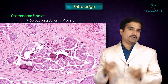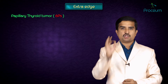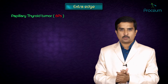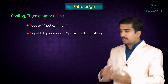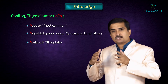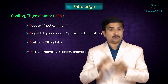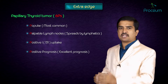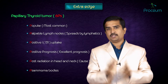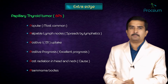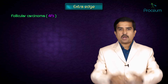For papillary thyroid tumors, remember six P's: first P is 'popular' meaning most common; second is palpable lymph node because it spreads by lymphatics; third P is positive for I-131 uptake; fourth P stands for positive prognosis meaning excellent prognosis; fifth P stands for post-radiation in the head and neck as the most common cause; and the sixth P stands for psammoma bodies.